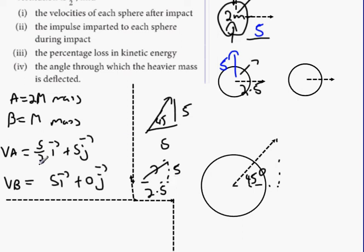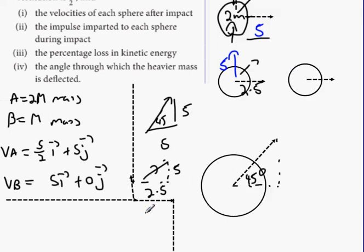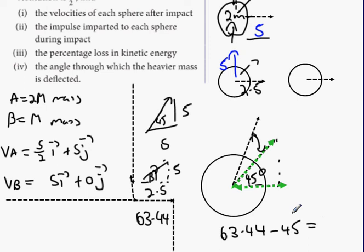We're going to tan inverse 5 over 2.5. Tan inverse 5 divided by 2.5 - make sure you're in degrees mode. 63.44, let's call it. So angle B is 63.44. Long story short: before impact you're here at 45 degrees, after impact you're up here at 63.44. What was the change in your angle? 63.44 take away 45 - 18.44 degrees. Sometimes it wants it in angle and radians. 18.44 degrees equals 18 degrees 26 minutes 24 seconds. 24 seconds is below 30, which means round down - 18 degrees 26 minutes.